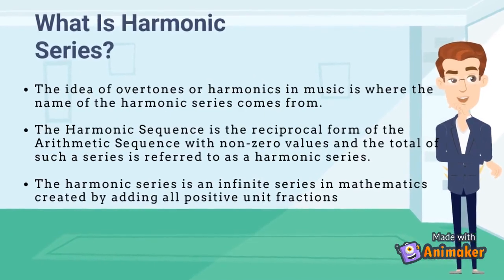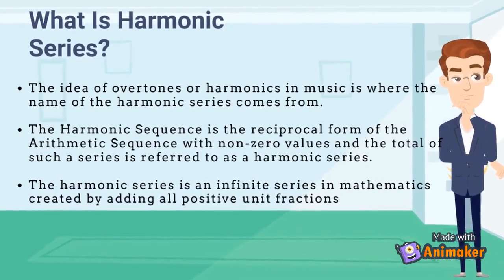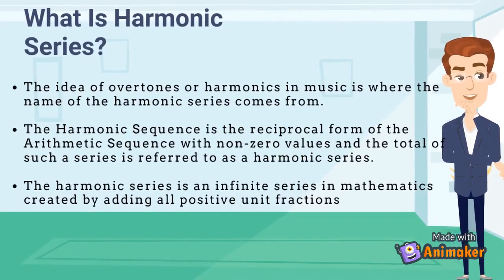What is a harmonic series actually? The idea of overtones or harmonics in music is where the name of the harmonic series comes from. Following the basic wavelength of a vibrating string come the wavelengths of the overtones. The harmonic sequence is the reciprocal form of the arithmetic sequence with non-zero values, and the total of such a series is referred to as a harmonic series. The harmonic series is an infinite series of mathematics created by adding all positive unit fractions.